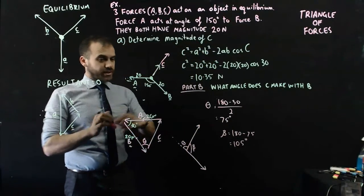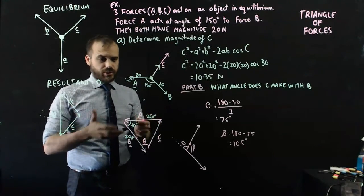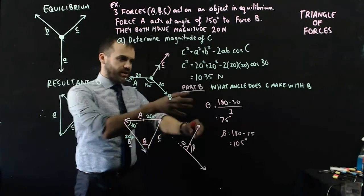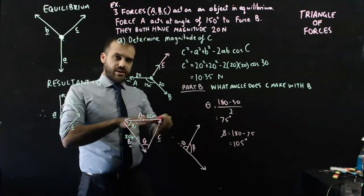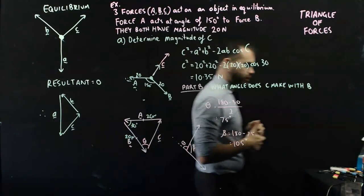We're really lucky here, because this was an isosceles triangle. If it wasn't an isosceles triangle, we'd probably have to use the sine rule to find that angle. But then that process of kind of moving vectors around and using the supplementary angle, same deal. All right, that is the triangle of forces.